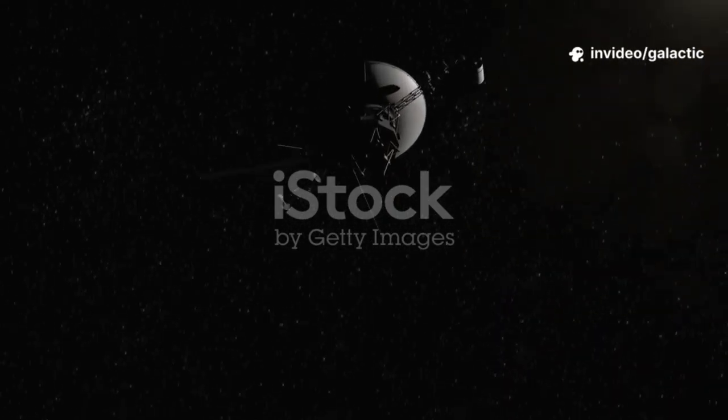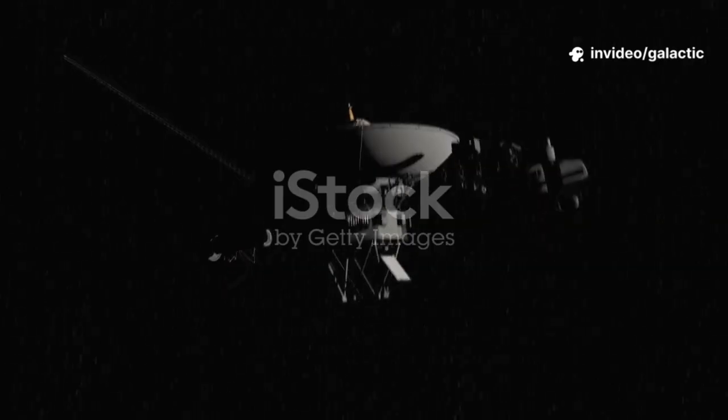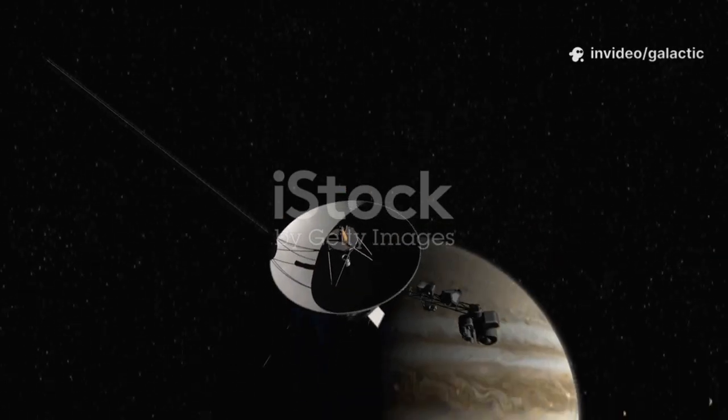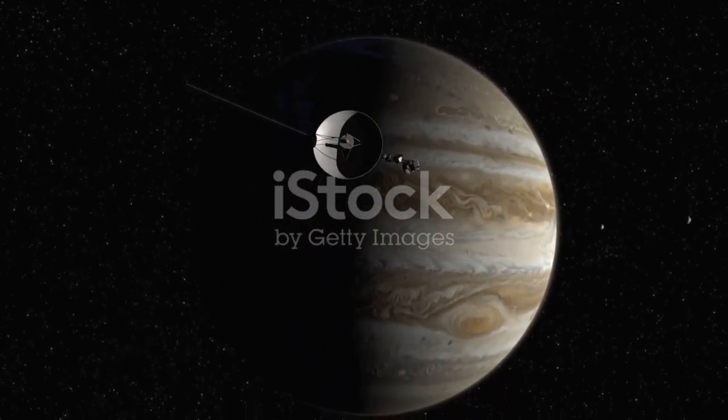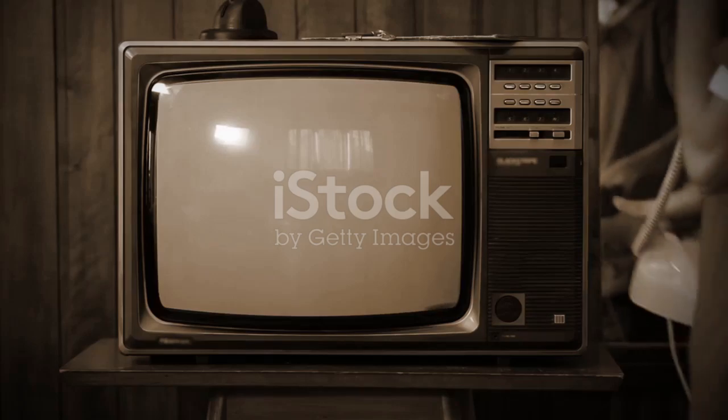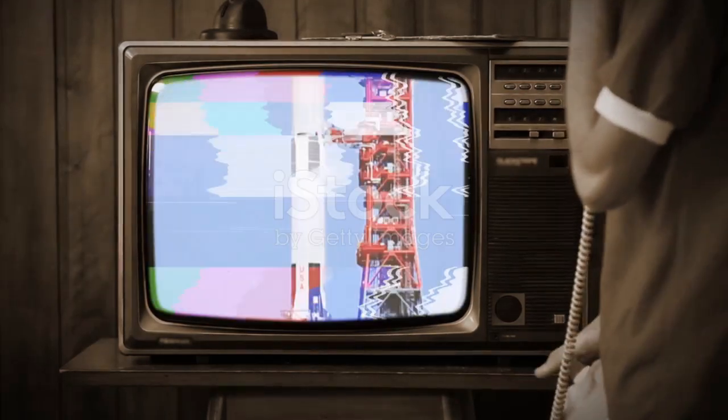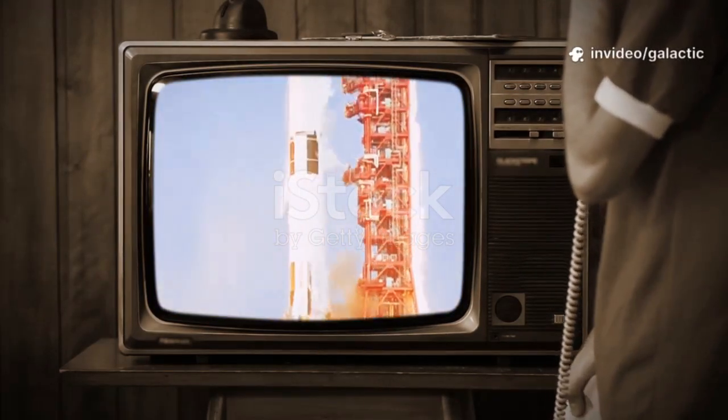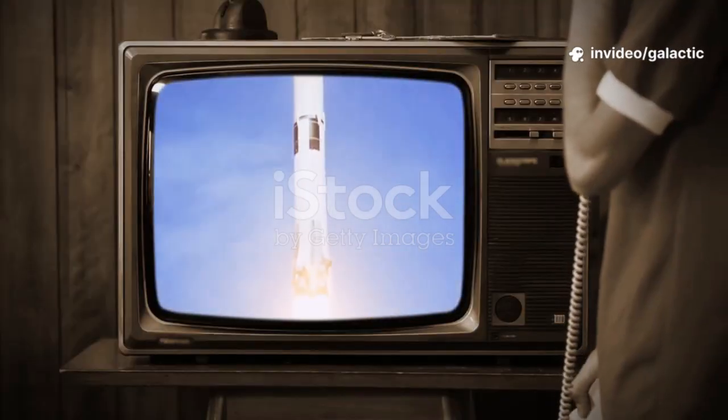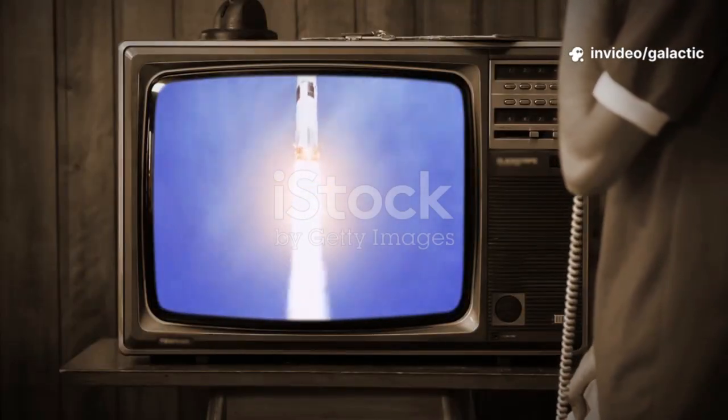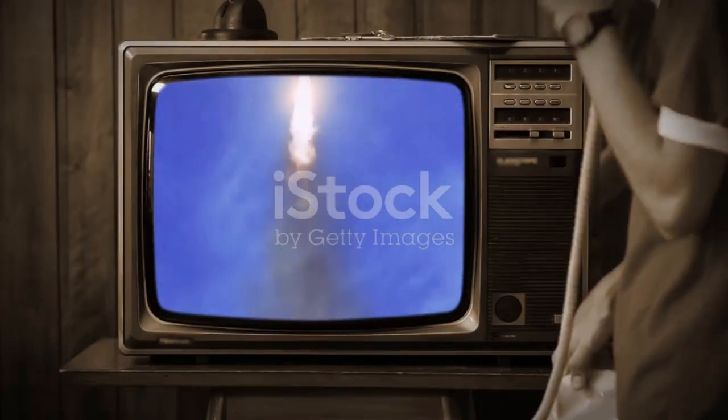So what is this incredible machine? Let's break it down and discover why Voyager 2 is one of humanity's most remarkable achievements in space exploration. Voyager 2 is a space probe, a robotic explorer launched by NASA in 1977. It was designed and built during a time when computers filled entire rooms, yet it was sent on a mission that would last for decades.